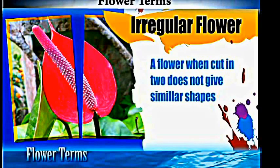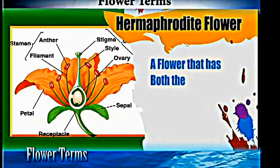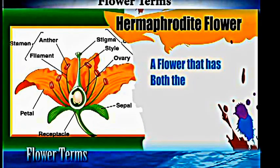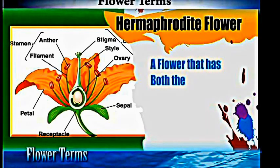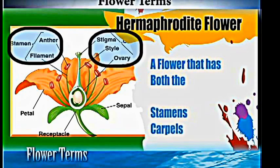Flowers can also be hermaphrodites. A flower is hermaphrodite if it possesses both the stamens and the carpels.